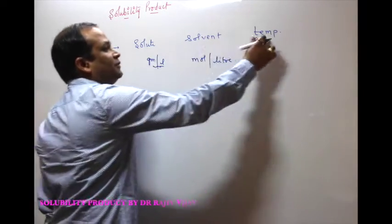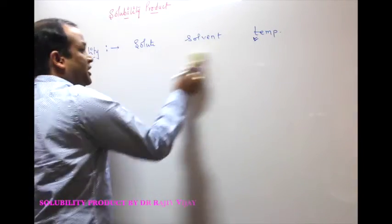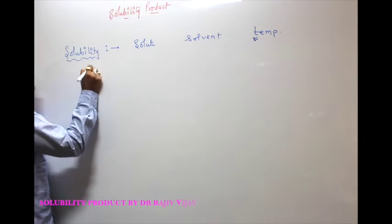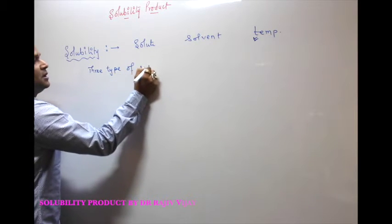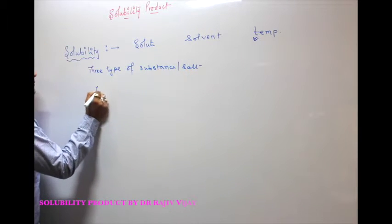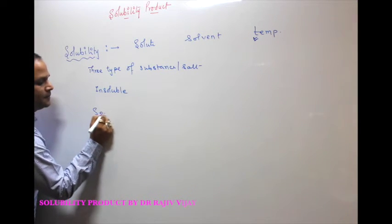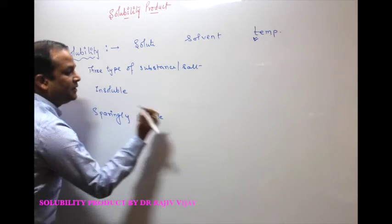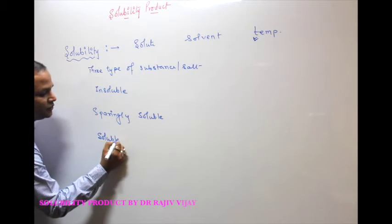The most important thing is the relationship between solute, solvent, and temperature. If you change the temperature, solubility will also change. Now, depending upon solubility, there are three types of salts: insoluble, sparingly soluble, and fully soluble.